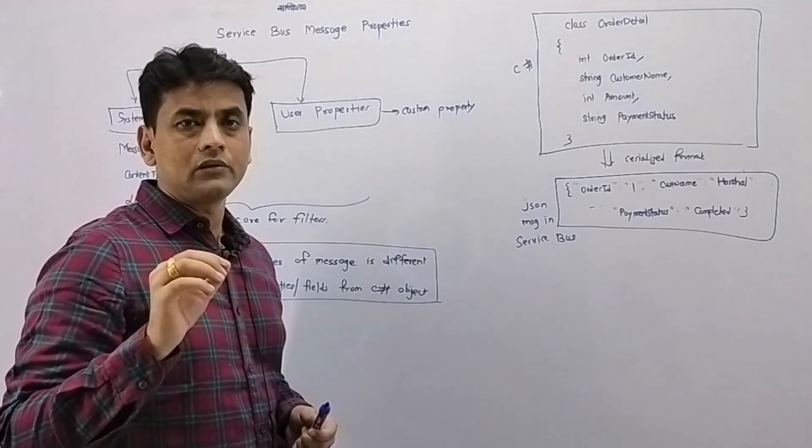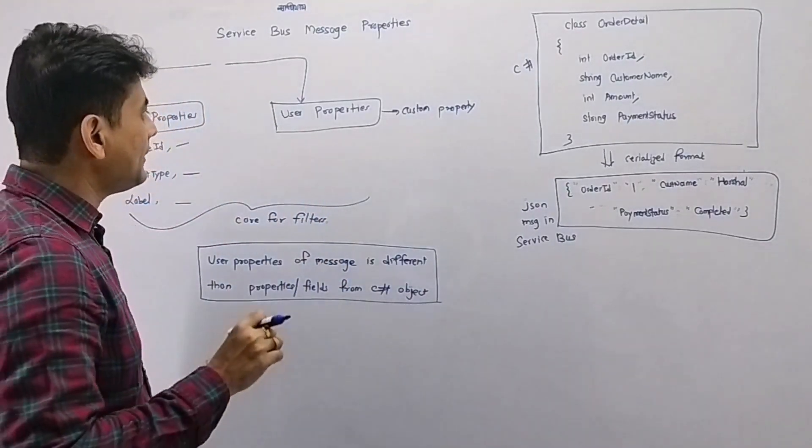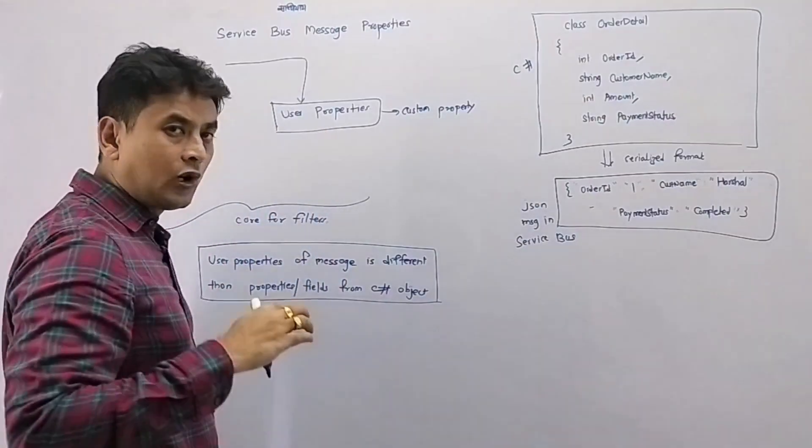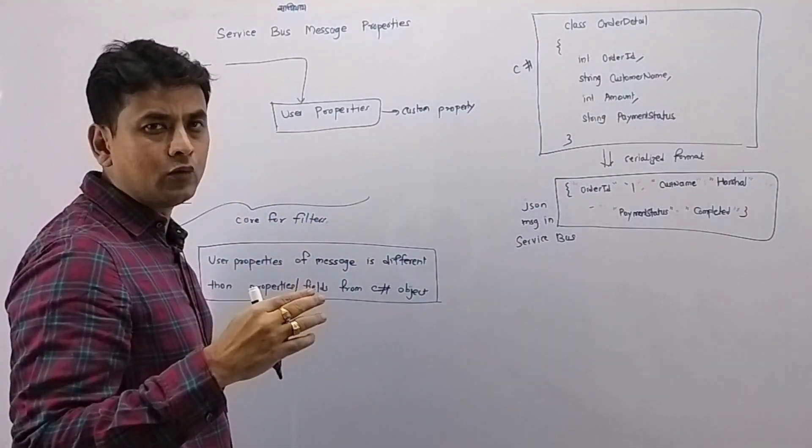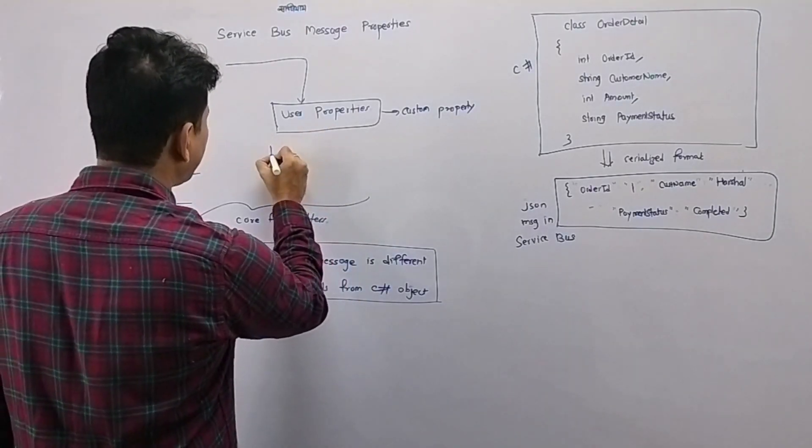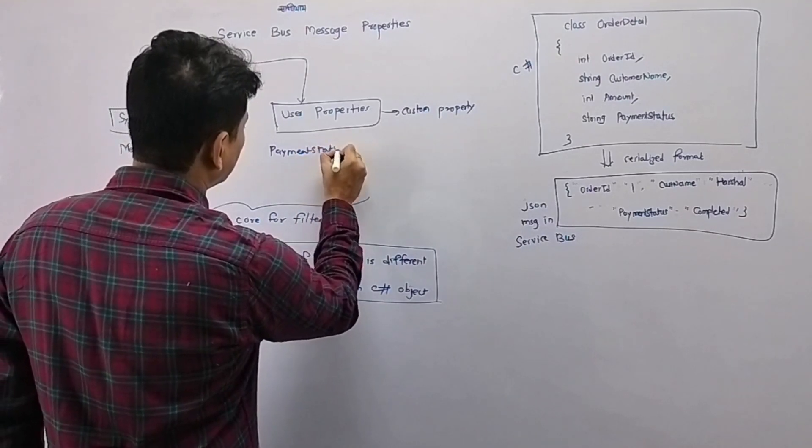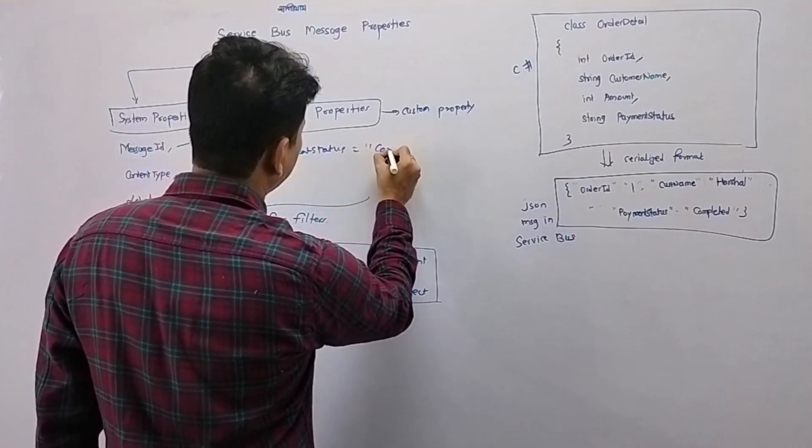Now let's try to understand an example of user properties. Say you are sending a message to service bus queue or topic, and for that you are specifying the user property as payment status equals completed.